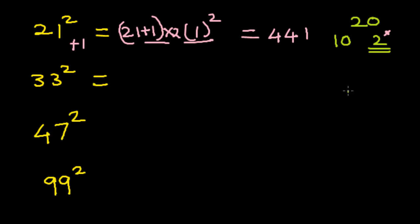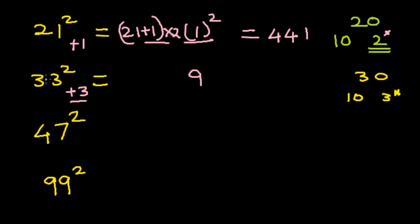Next we take the number 33. We select the base 30. Our real base is 10, and 30 divided by 10 is 3, which is our multiplying factor. First step: subtract the number and the base — 33 minus 30 is plus 3. Square this number — 3 squared gives us 9. Then 33 plus 3 is 36, multiplied by 3 is 108. The answer is 1089.